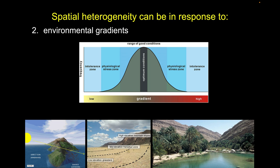Environmental gradients: all organisms have an optimal set of environmental conditions where they thrive. That's symbolized by a normal distribution, going from some low level of a particular environmental variable — you can call it water, warmth, or heat — on the left, to a high level on the right.